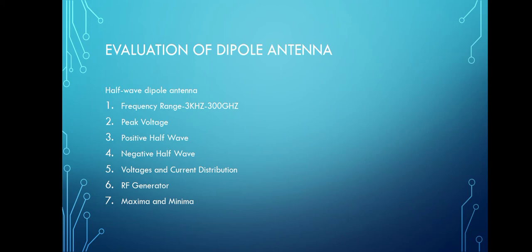The current minima, also called nodes, are obtained at the extreme ends of the antenna, whereas the maxima are obtained at the center. Minima are obtained at the node points.